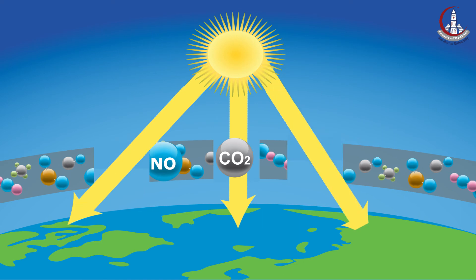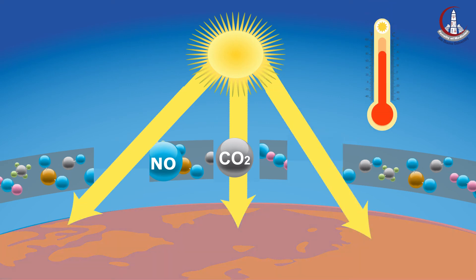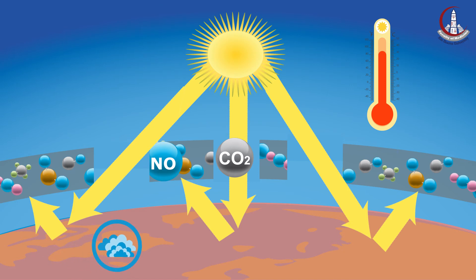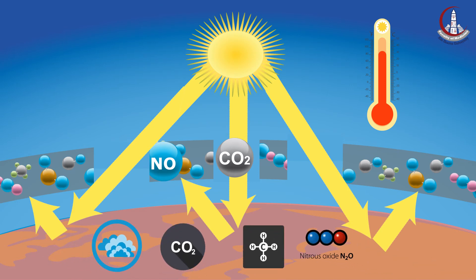The primary greenhouse gases in the Earth's atmosphere are water vapor, carbon dioxide, methane gas, nitrous oxide, and ozone.